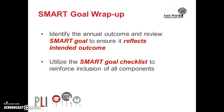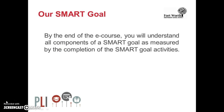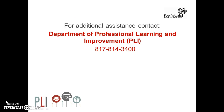As you wrap up this eCourse, be sure to identify the annual outcome and review your SMART goal to ensure it reflects the intended outcome. Be sure to also utilize the SMART goal checklist to reinforce inclusion of all components. This checklist can be found in the notes section of the eCourse on Eduphoria. Hopefully the goal has been achieved and you understand all components of a SMART goal and have successfully completed the SMART goal activities. For additional assistance, contact the Department of Professional Learning and Improvement, PLI, at 817-814-3400.